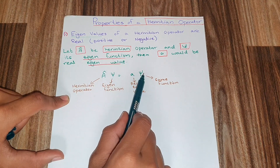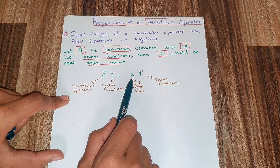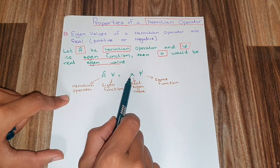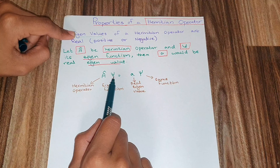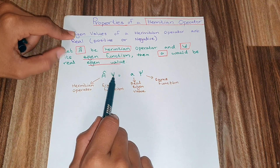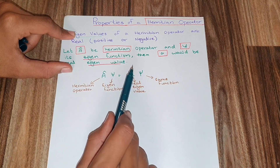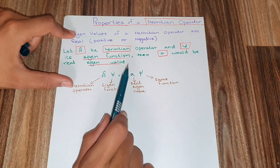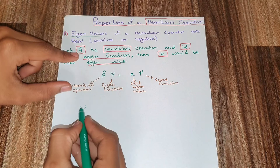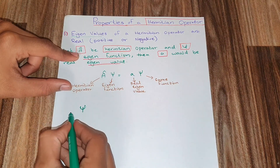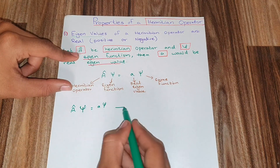I have to prove that this value A here is a real eigenvalue — that it does not contain iota. So let's say I have a function psi on which an operator A is applied, and the answer comes out to be A·psi. Let's call this equation number one.